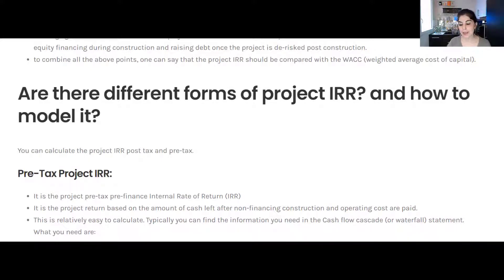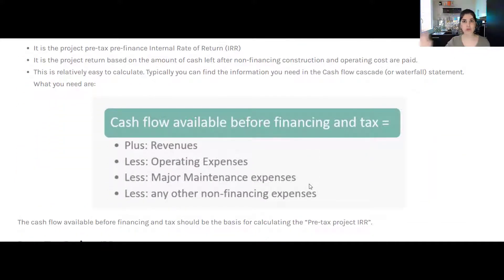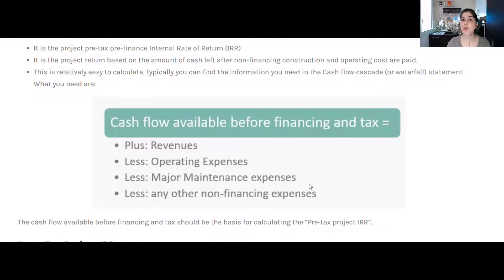Now the last topic covers the different types of project IRR: pre-tax project IRR and post-tax project IRR. The pre-tax project IRR, as the name says, takes the revenue line in a cash flow waterfall, deducts operating expenses, major maintenance, and any other non-financing costs, and arrives at the line called 'cash flow before financing.' This is the base for calculating the pre-tax project IRR.